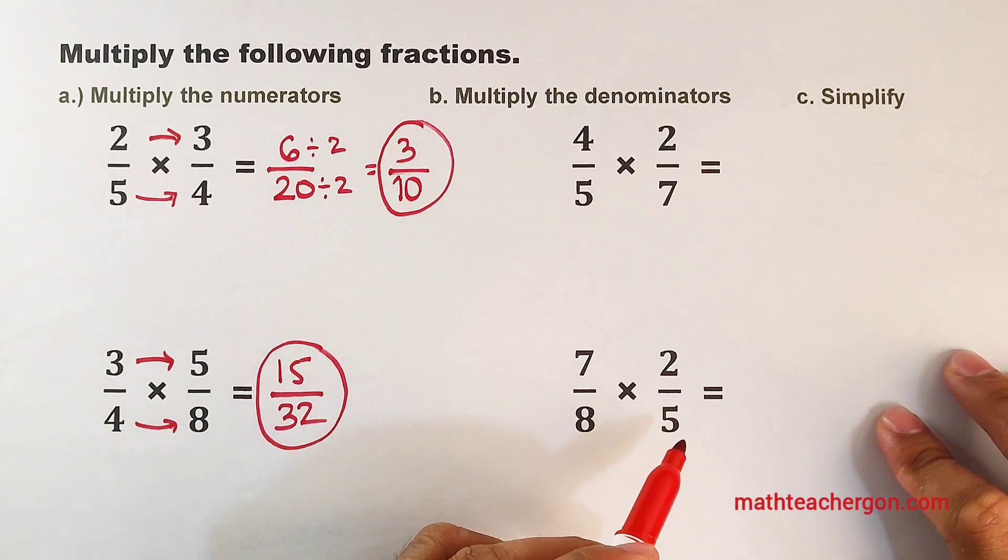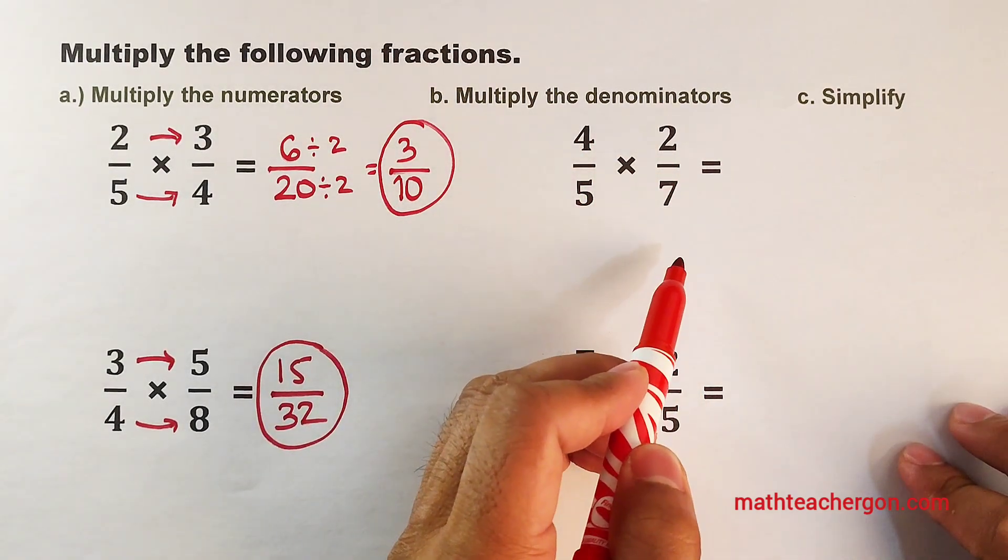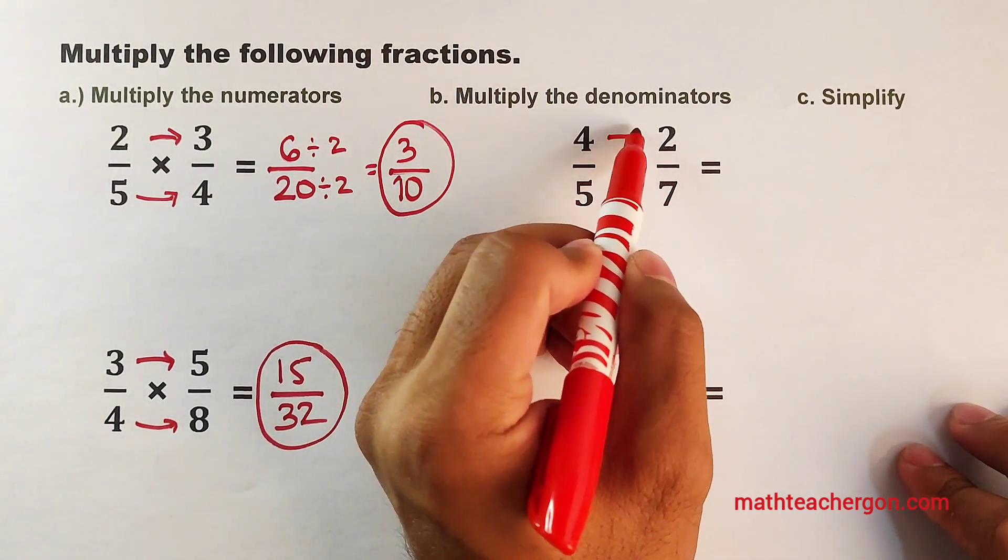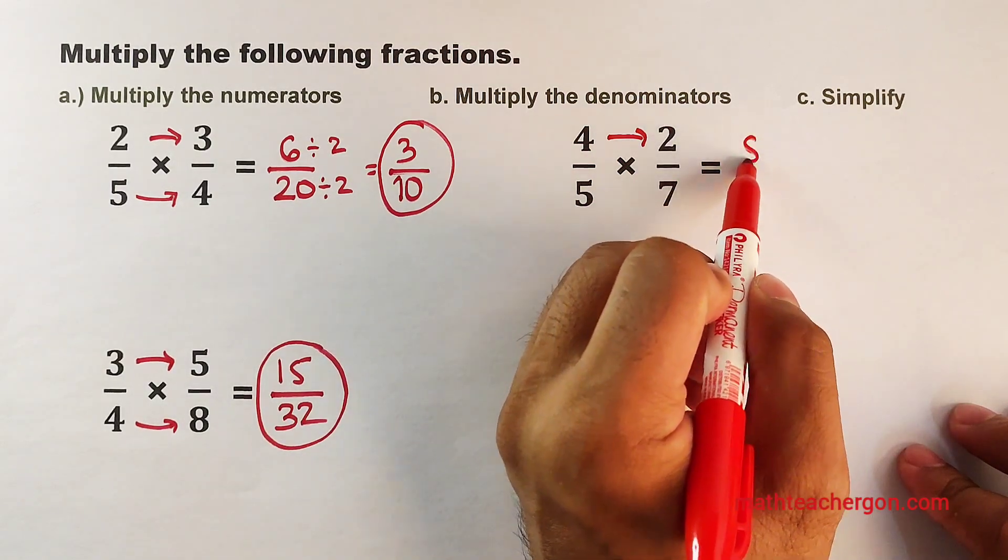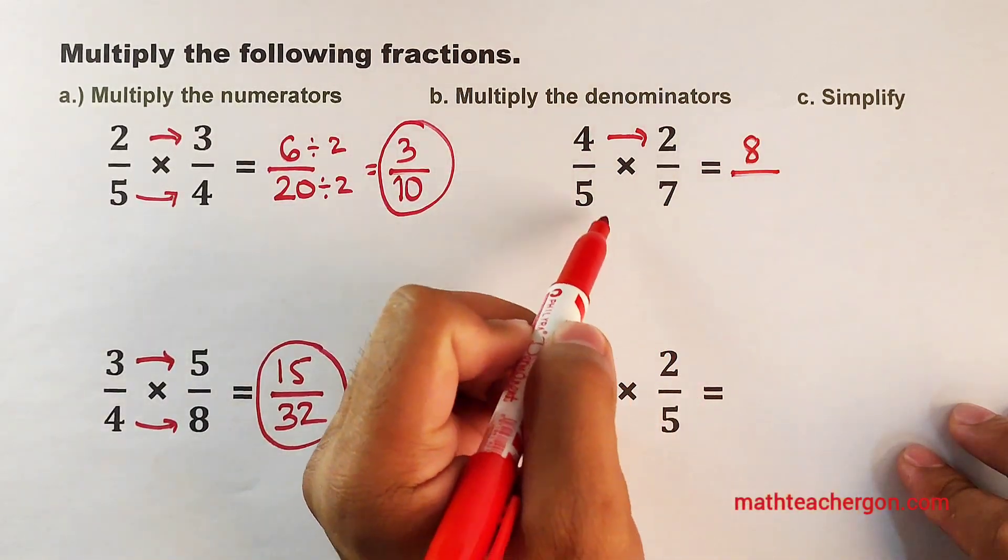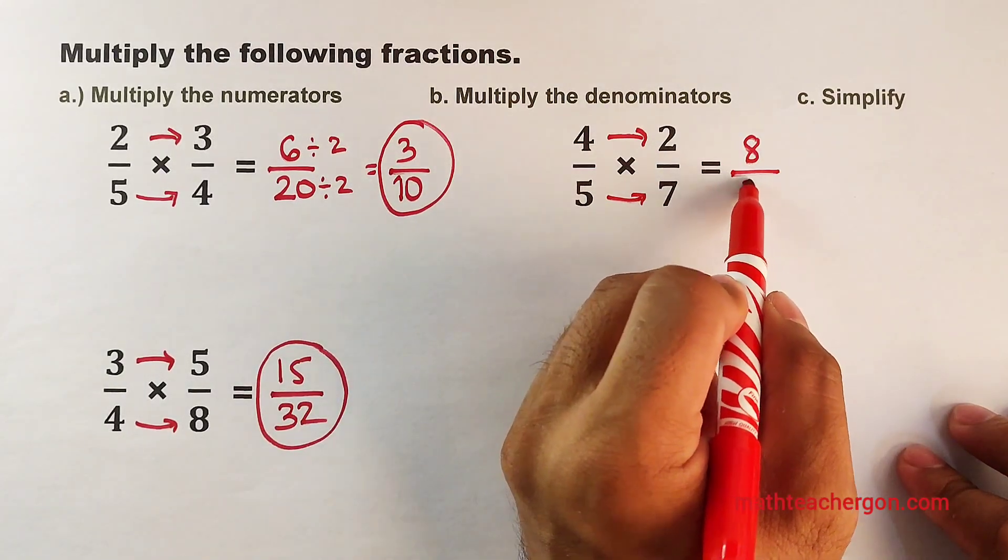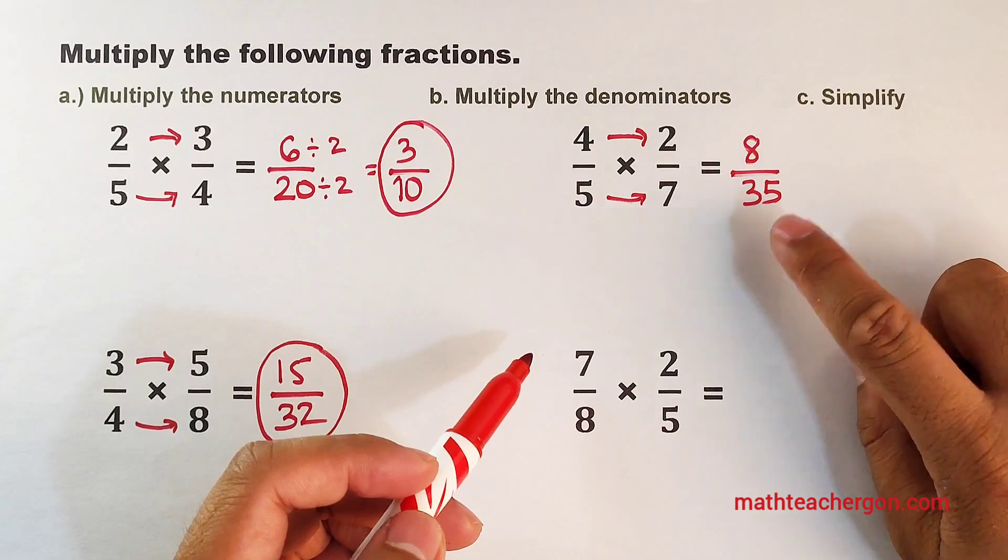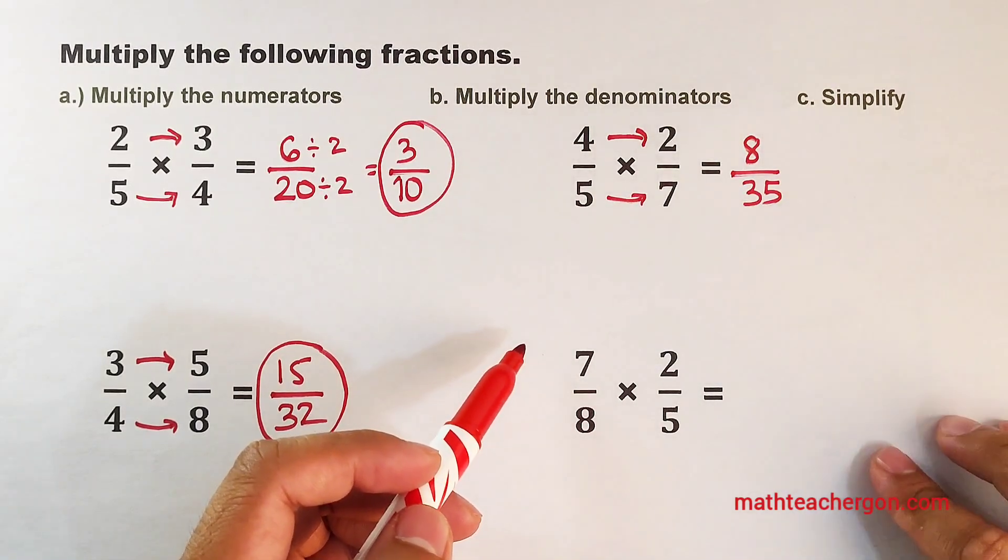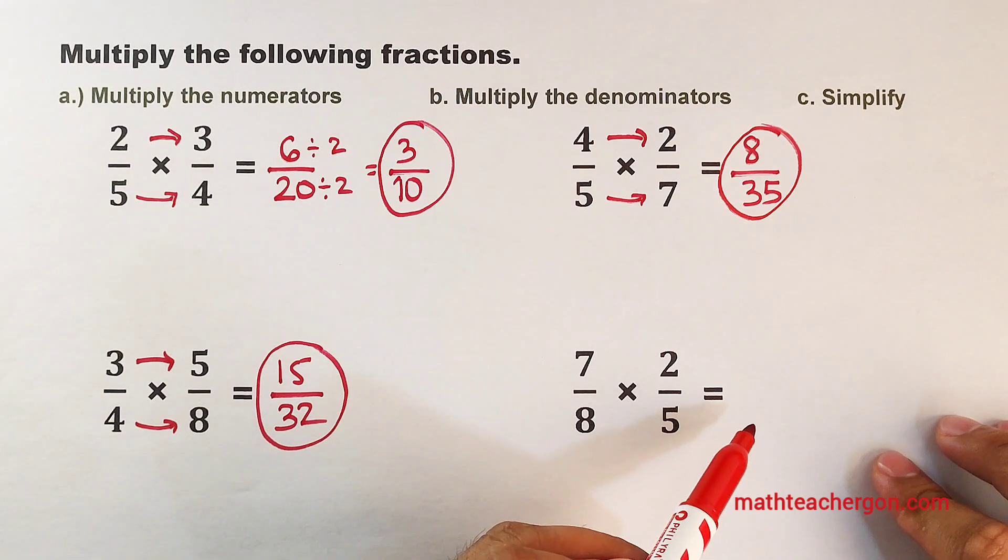Now let's move on with the third problem. We have 4 over 5 times 2 over 7. Let's have the first step. Multiply 4 times 2. That would be 8 over 5 times 7, that is equal to 35. Let us check if we can still simplify this fraction. 8 over 35 is definitely simplified.